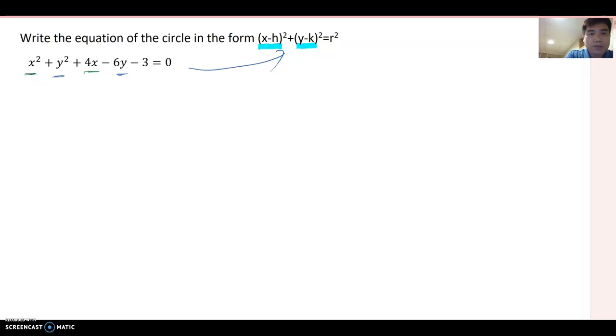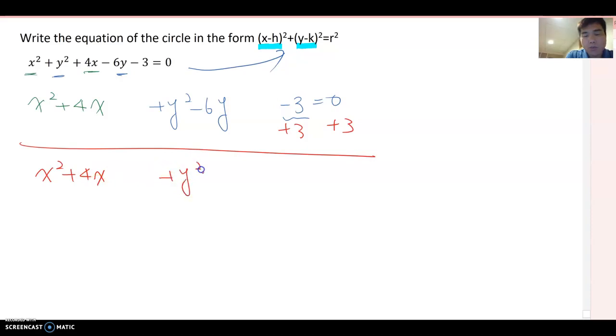So first, x² + 4x and then I'm going to leave some blank here and + y² - 6y blank and then -3 = 0. Since this number doesn't do anything now, I'm going to remove on this side. So +3 and +3. Then this is going to be x² + 4x and then y² - 6y = 3 here.